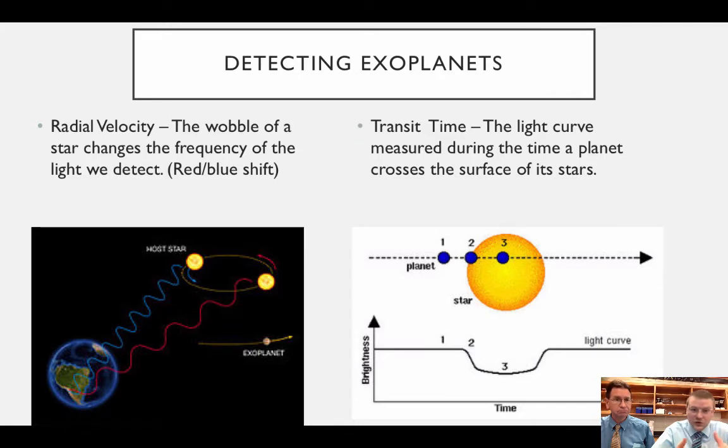If the star is blue, it's coming towards us, and if it's red, it's going away from us. So in that radial velocity, in that shifting and the wobbling of a star, we can tell that there's planets there.